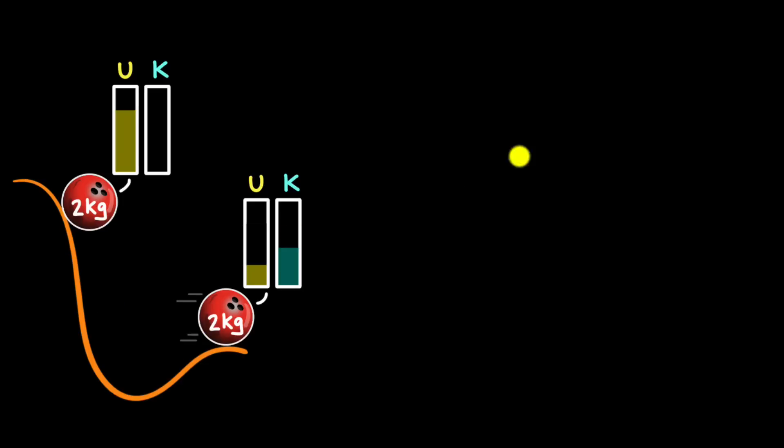We can ask for the values of the potential energy of the system at every location, so we can do this for any two points. For example, when the ball is at the top, the system has 200 joules of potential energy. When the ball is at the bottom, it has zero joules of potential energy, and so on.